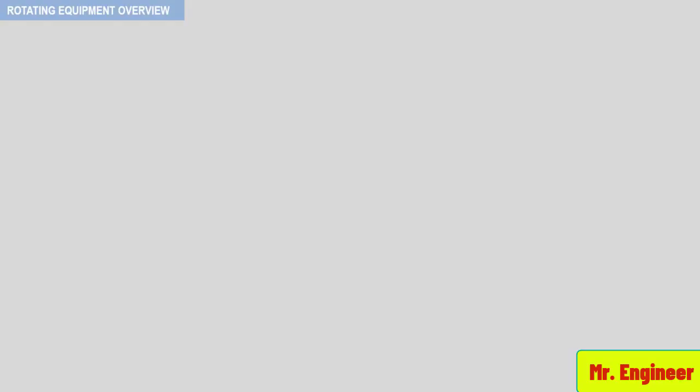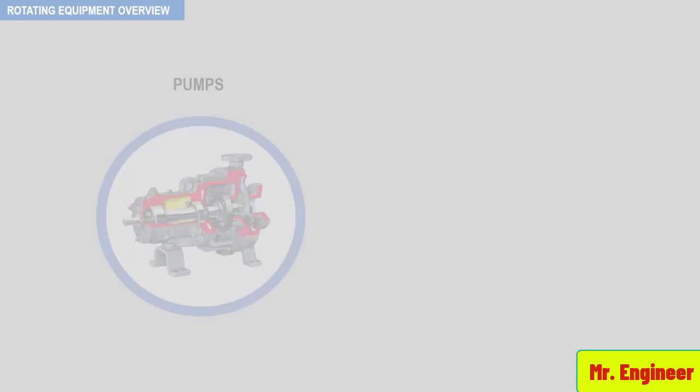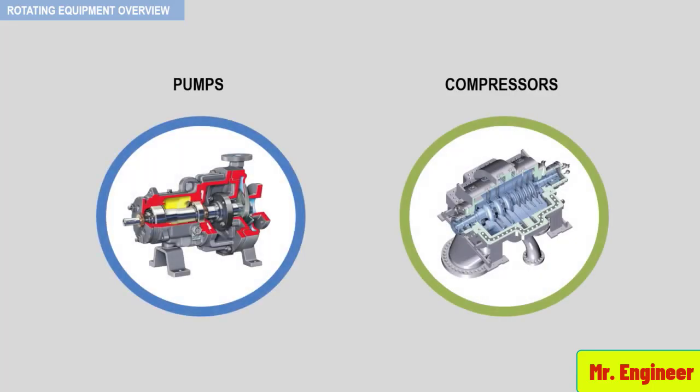In this course, we will examine many different types of rotating equipment. However, the task will be a lot easier if we begin our study by first focusing on the similarities of the equipment and then the specific differences. As an example, I have chosen to first present pumps, then compressors.